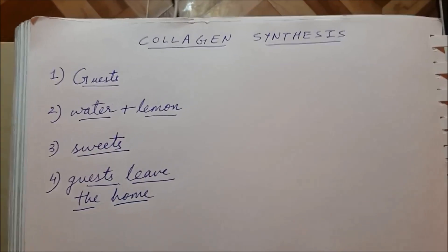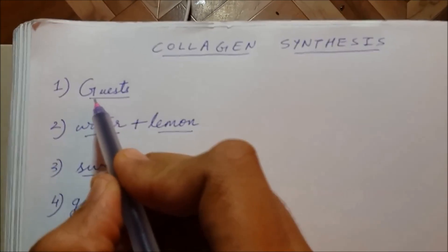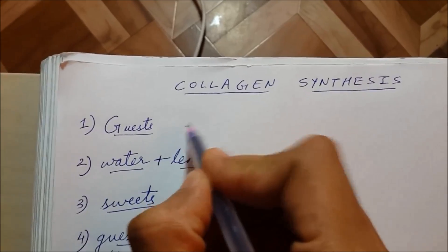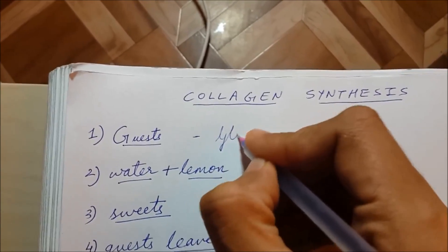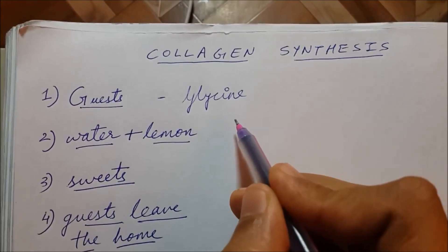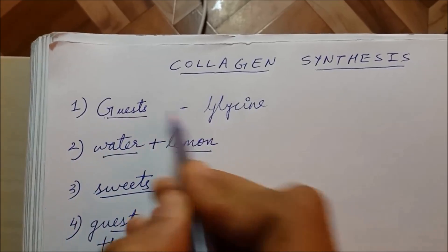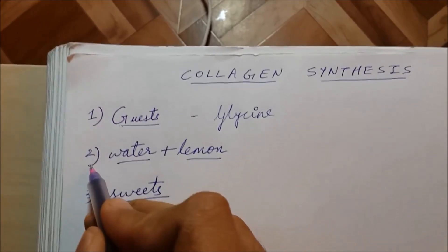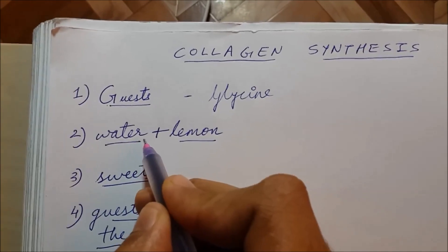I have kept the 'G' capital in 'Guest' — that helps me remember that glycine is the most abundant amino acid in collagen. So the capital G helps me remember glycine. In the second step, giving water to the guest and adding lemon to it — water helps me remember hydroxylation.